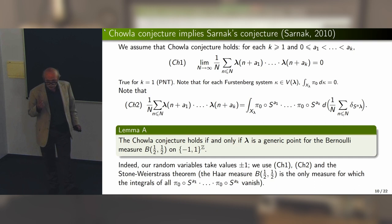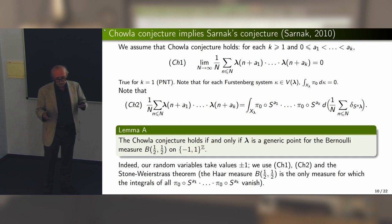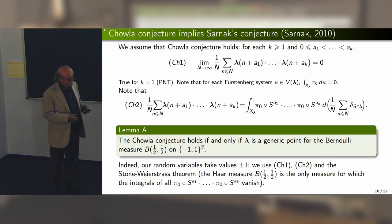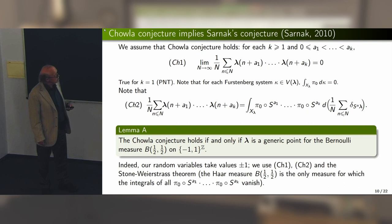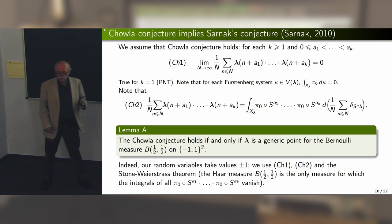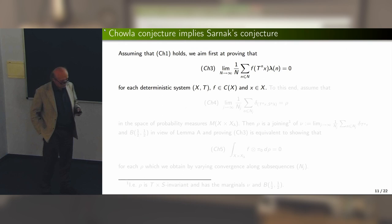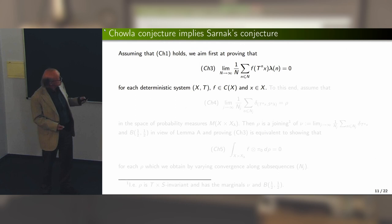We want to show the implication: Chowla implies Sarnak. This was stated in Peter Sarnak's article; Sarnak's proof can be found on Terence Tao's blog. The proof I will show uses dynamics. The first step: assume Chowla holds for the Liouville function. We are going to prove Sarnak first for the Liouville function, and then show it also holds for the Möbius function.